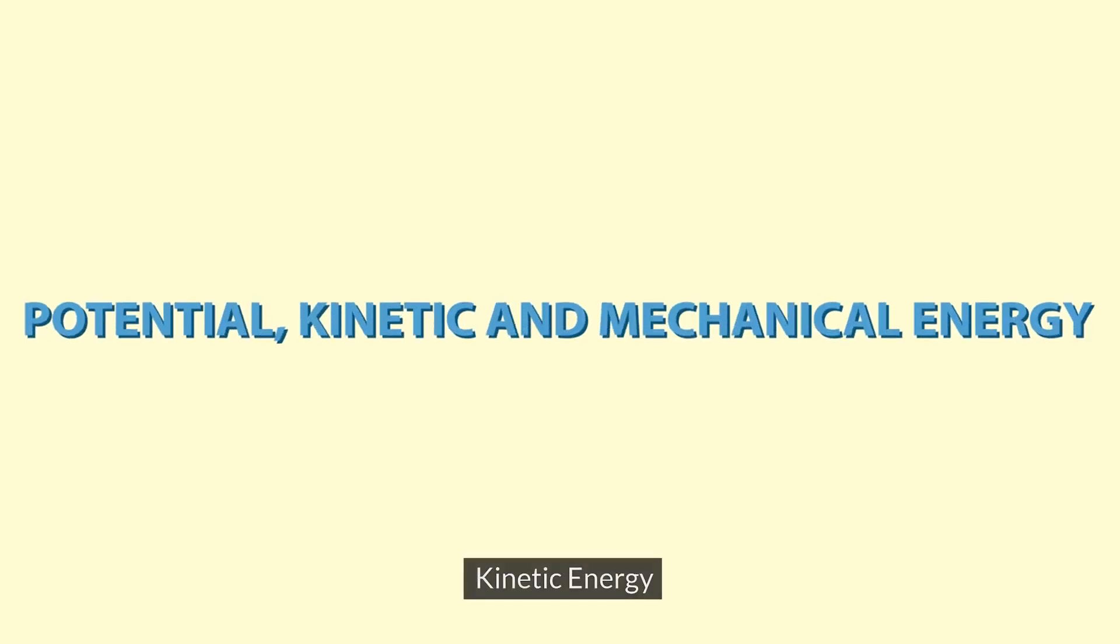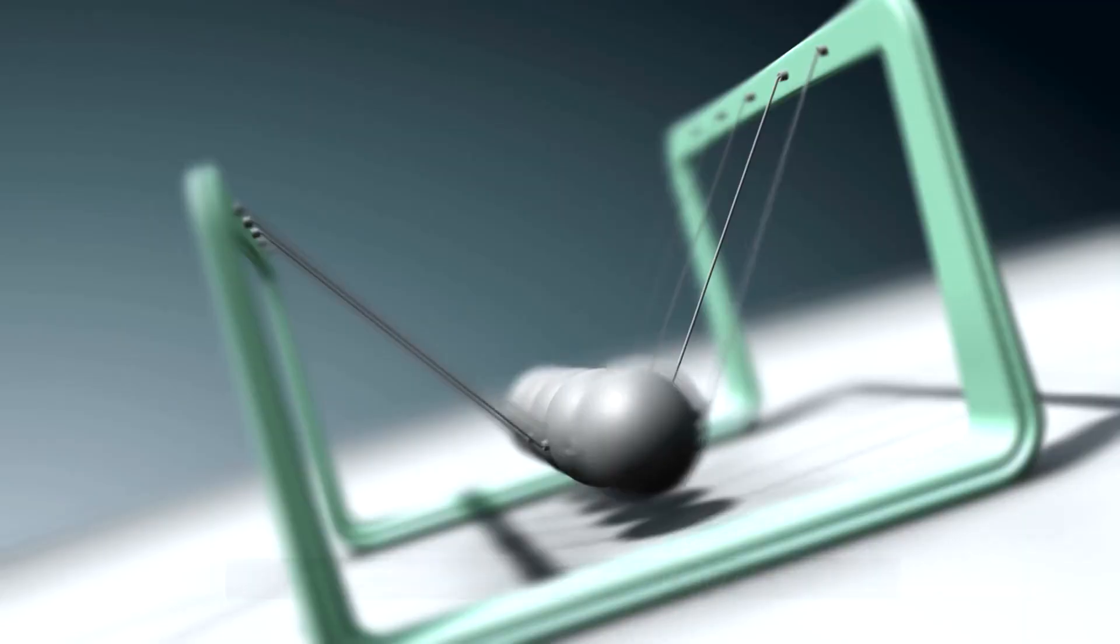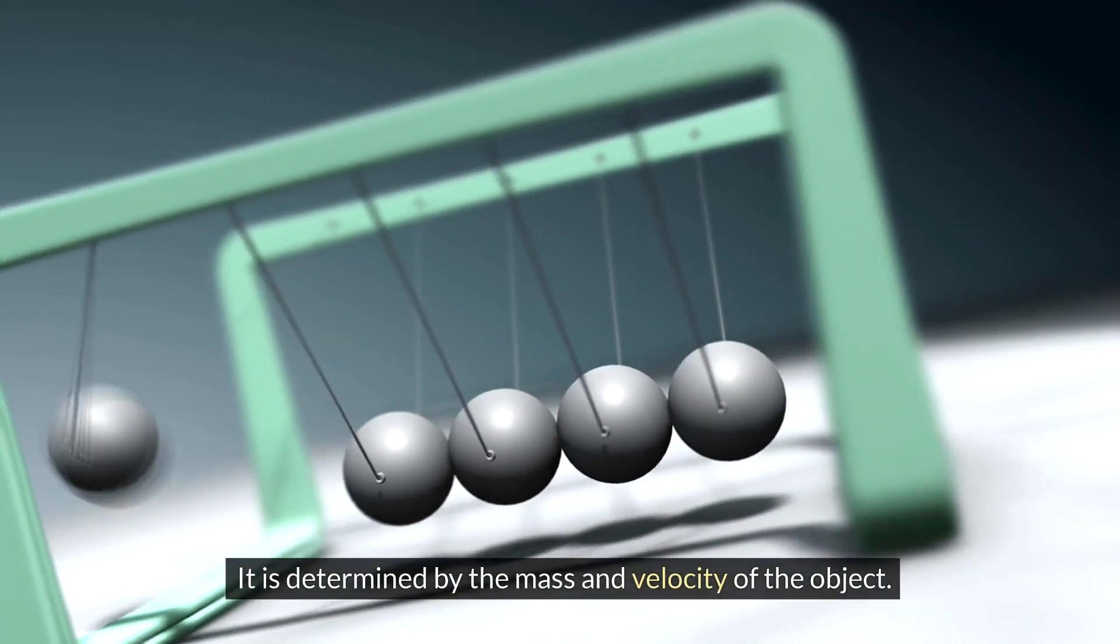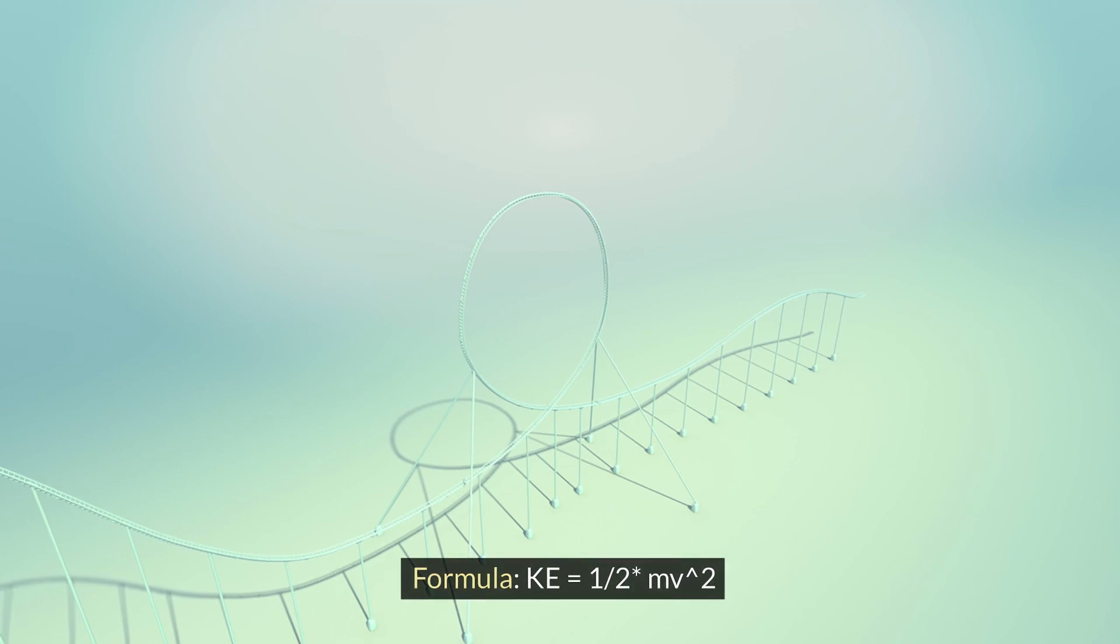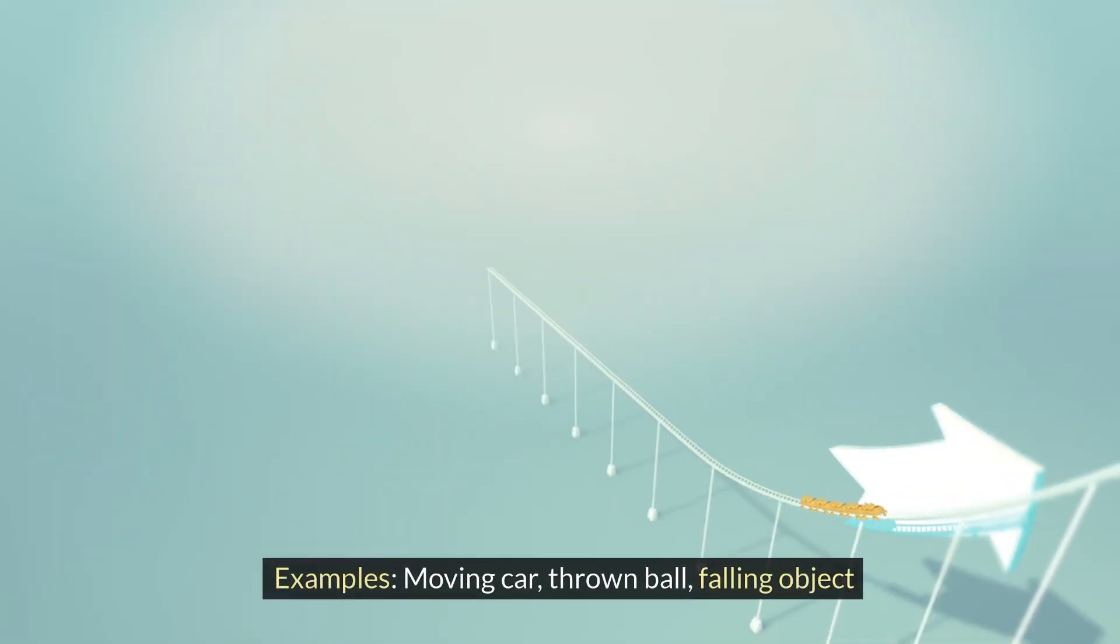Kinetic energy: energy resulting from the motion of an object. It is determined by the mass and velocity of the object. Formula: K equals half mv squared. Examples: moving car, thrown ball, falling object.